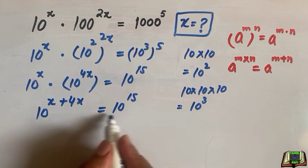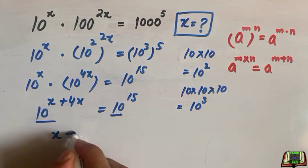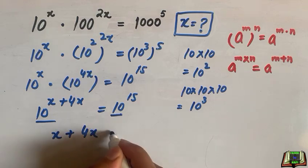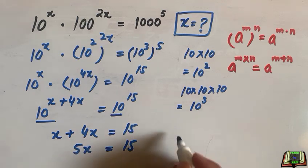As bases are same and equal, they will be cancelled out. We are left with exponent x plus 4x is equal to 15. As these two terms are like terms, we can add 4 and 1, 5x is equal to 15.